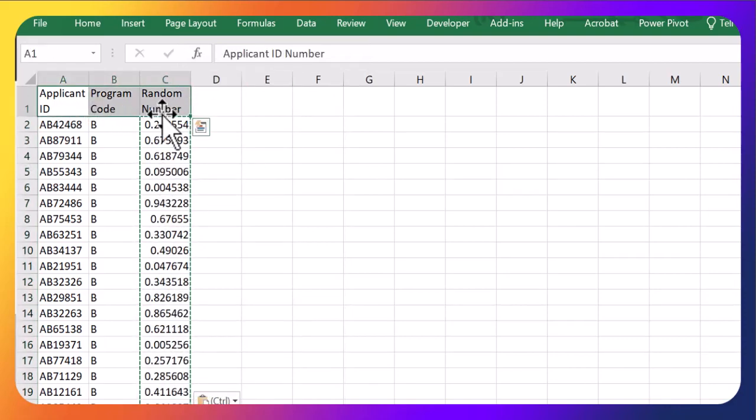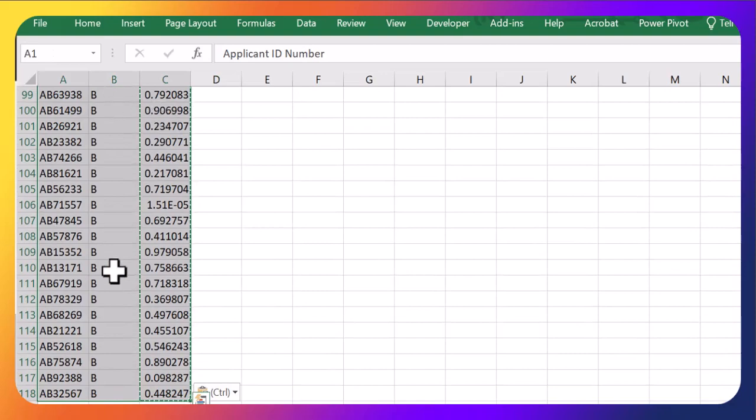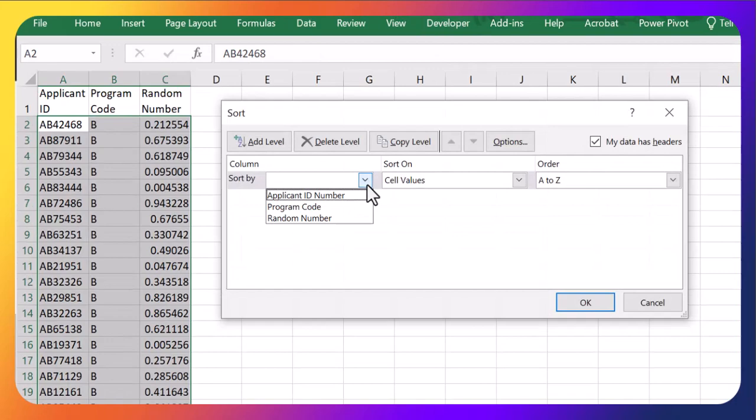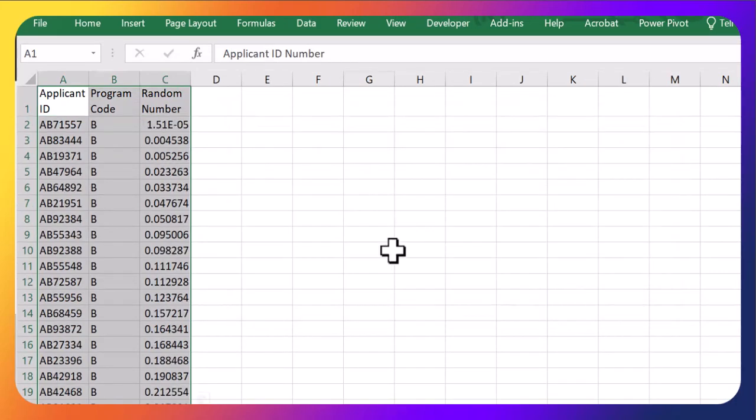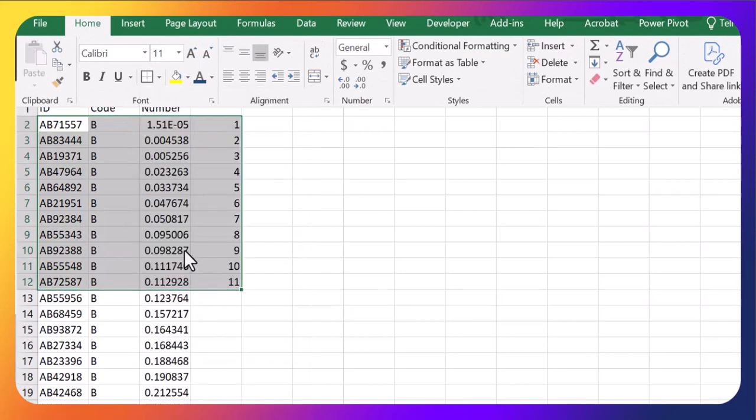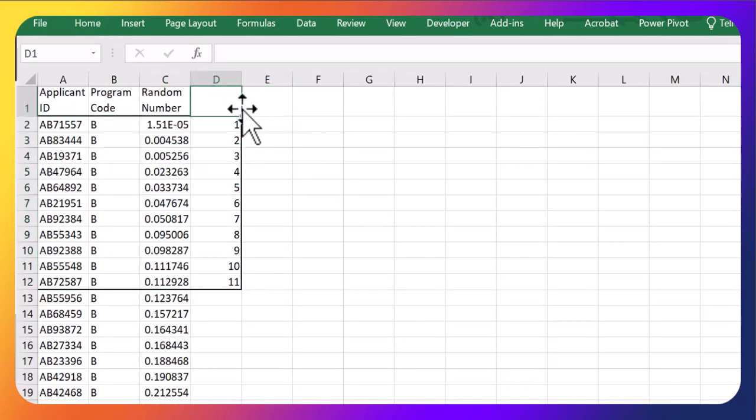And now, Control-Shift-Down, highlight this whole group, go to the Data tab, and go to Sort. And sort by this random number column that I just made. And I'm going to grab the first 11. Let's just do this. These first 11. Beautiful. And that makes up the first part of my stratified sample is these first 11.